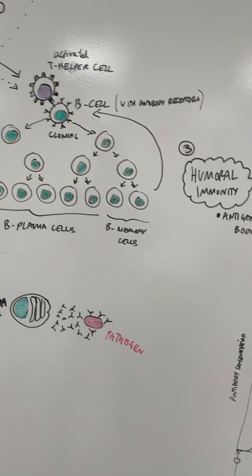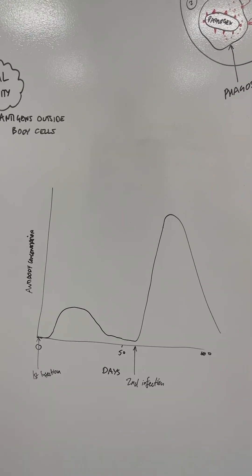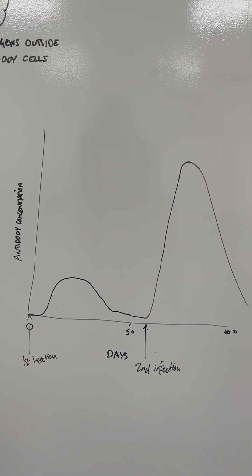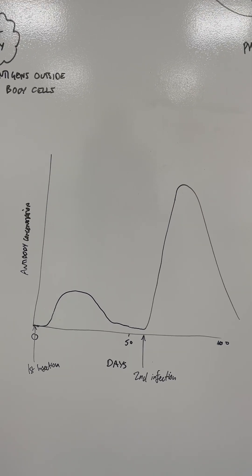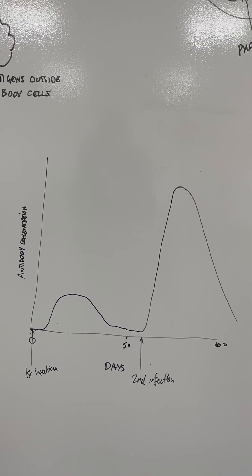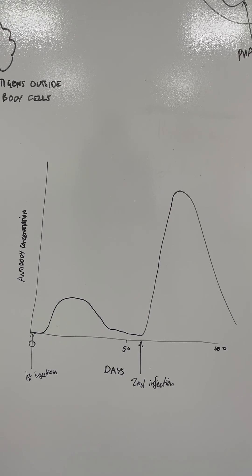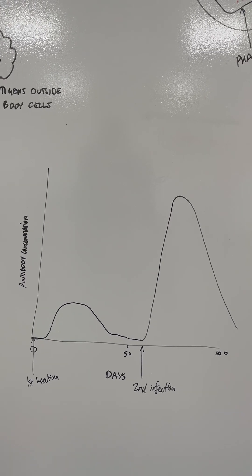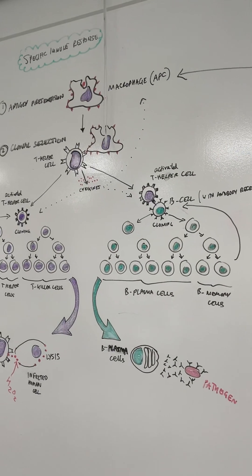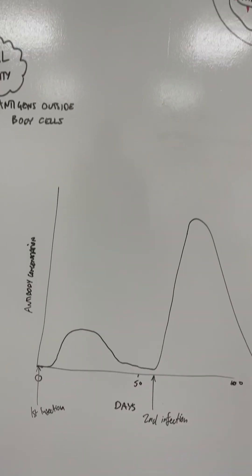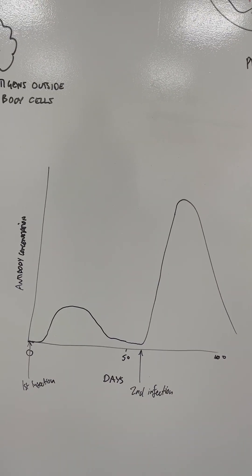Once you've got immunological memory, you've then got the situation where you can have the secondary immune response. The first part of this graph shows the primary immune response. The first infection happens on day zero, but it takes a good five days for the specific immune response to happen and for antibody concentration to build up, which is what's shown on the Y axis.